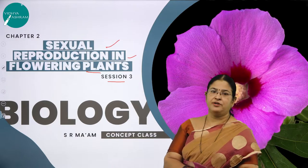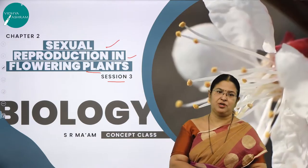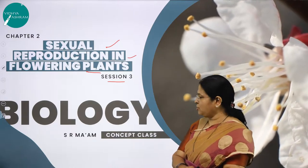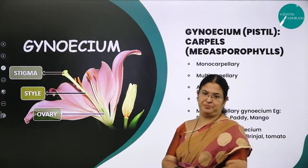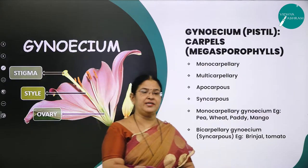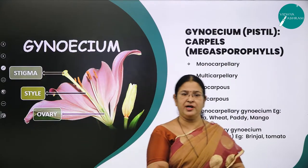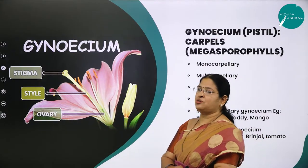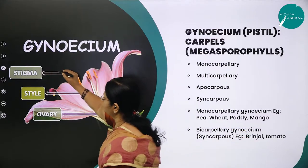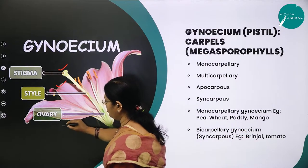Moving on to session 3 of this chapter called sexual reproduction. Gynoecium is the female reproductive structure of a flower which consists of three very important parts: stigma, style, and ovary.